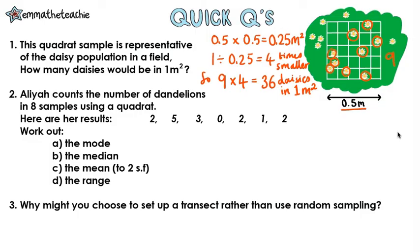Ali counts the number of dandelions in 8 samples using a quadrat. That's actually wrong, it should say 7 samples. And here are her results. And you've been asked to work out the following. First up, the mode. Remember this is just the most common value, which here is 2. The median is the middle value, so we need to write them out in order from smallest to largest, and then find the value that's in the middle. It happens to be 2 as well.